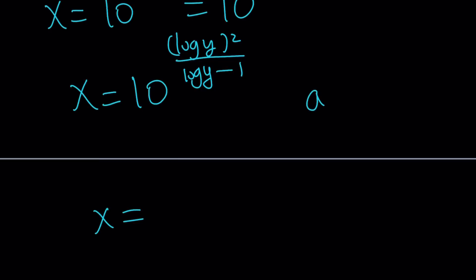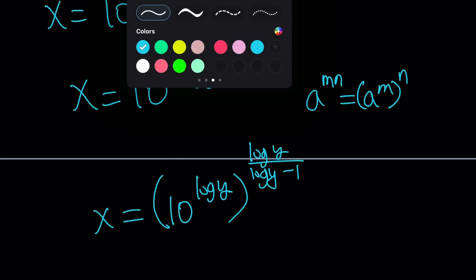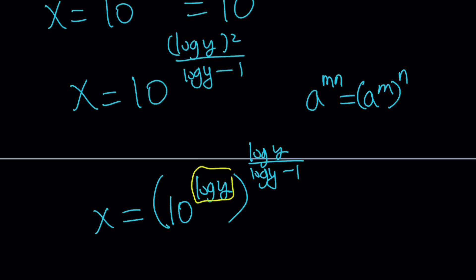Let's do the following. If you have a to the power mn, you can write it as a to the power m and then that is raised to the power n. The exponents are multiplied. So we can split it up like this: 10 to the power log y, which is something we want, and then that to the power log y over log y minus 1. Why? Because when you multiply these two exponents, you get this exponent. Hopefully it makes sense.